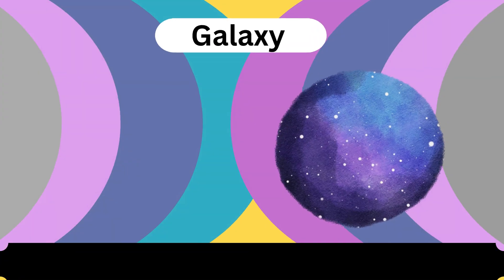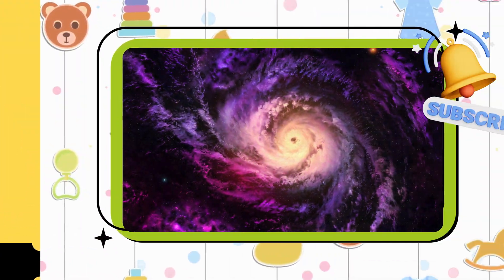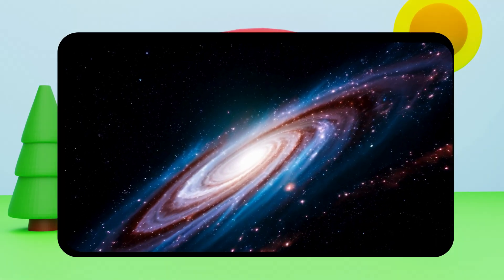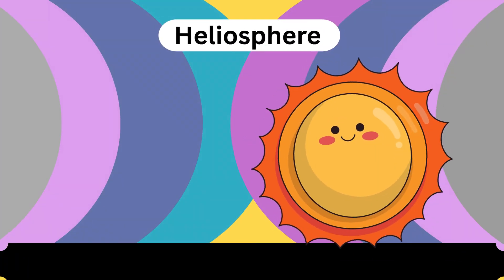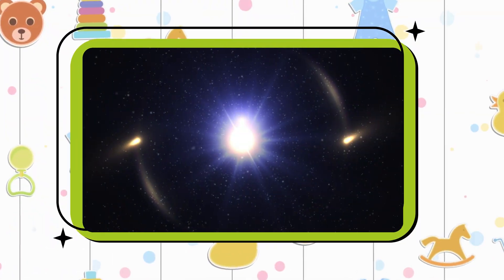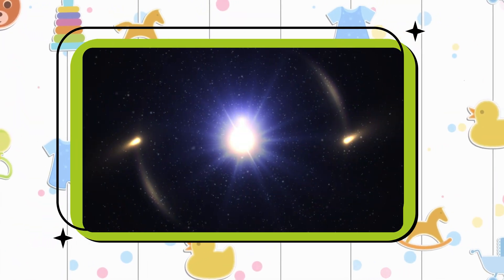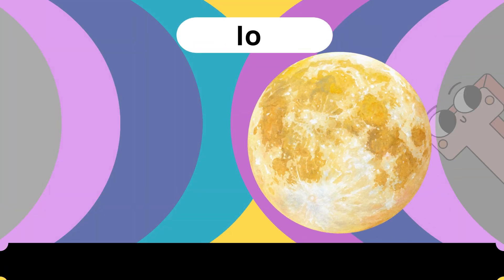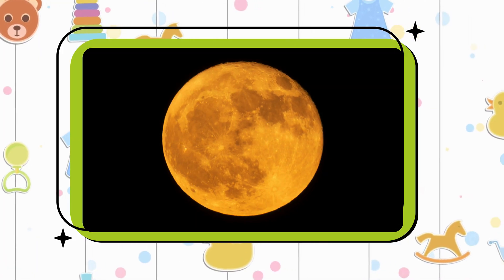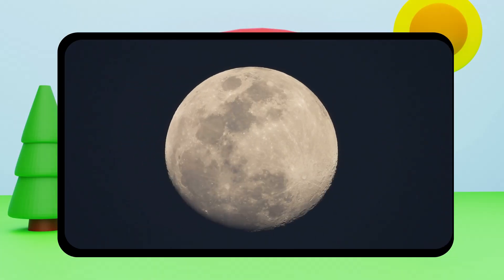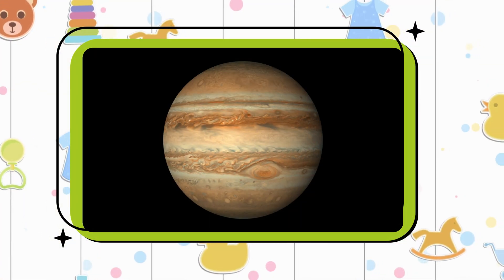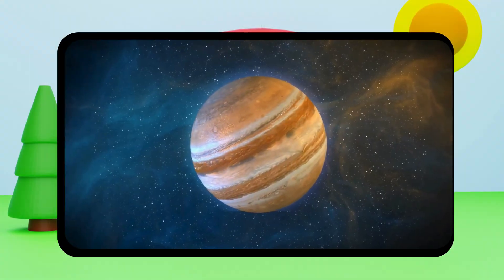G is for Galaxy. G-G-Galaxy. G-Galaxy. H is for Hydrogen Sphere. H is for Hydrogen Sphere. J is for Jupiter. K is for Jupiter.